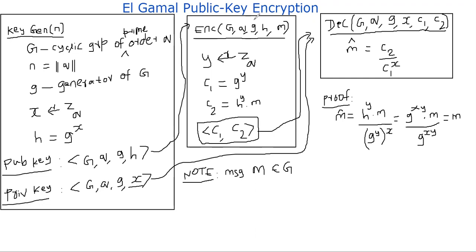All right, so let's get started. There are three components. I put it in three boxes. One is the key generation component, another is encryption, and then decryption. So let's spend time walking through each of those boxes.